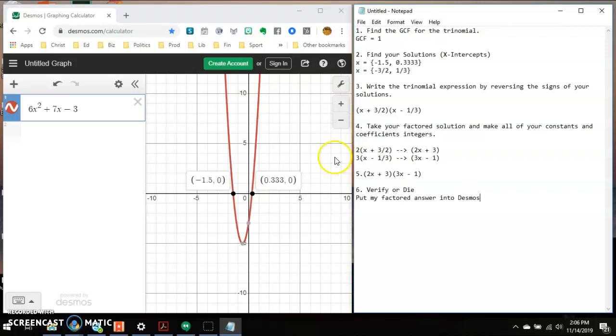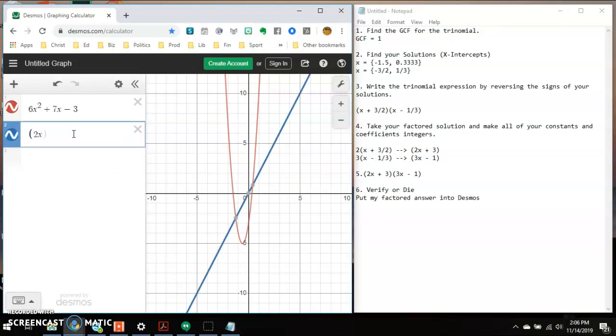So let's see if I get the same parabola when I put this in. 2x plus 3 times 3x minus 1. Ta-da! And you see that the blue is right on top of the red. So it is the exact same thing. So I have verified that my answer is 2x plus 3 times 3x minus 1.